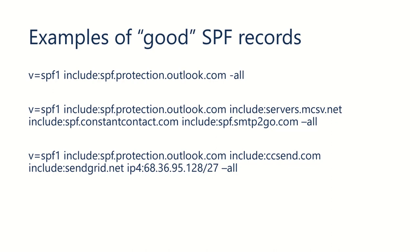You can see we've included a couple of more complicated ones here, where we've got includes that not only include Office 365 but also include other things like Constant Contact and SMTP2Go. So these are examples of different ways to add those includes.